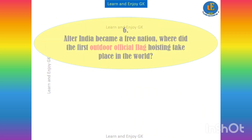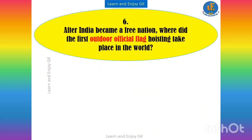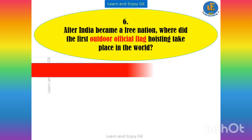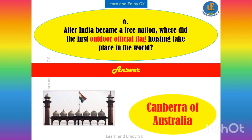After India became a free nation, where did the first outdoor official flag hoisting take place in the world? Answer: Canberra of Australia.